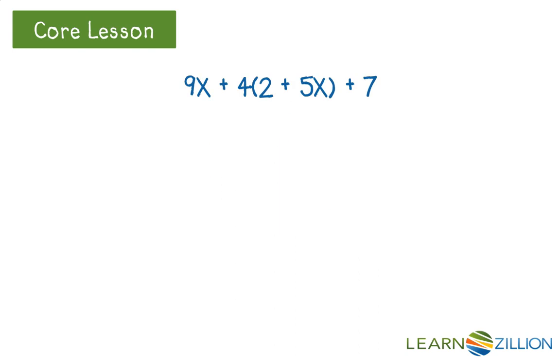Here we are given a rather large expression to simplify: 9x plus 4 times the quantity of 2 plus 5x plus 7. Where would we start?